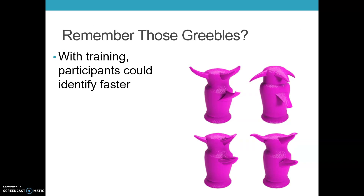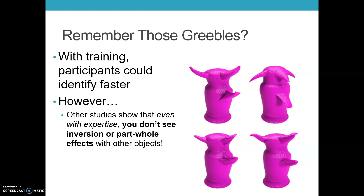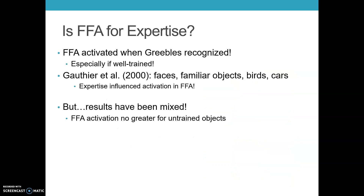Researchers trained people to identify novel objects called greebles. With training, participants are faster at identifying greebles, but even with expertise, you don't see an inversion effect or a part-whole effect with greebles. Gauthier looked at faces, familiar objects, birds for bird watchers, and cars for car enthusiasts, and found that expertise does influence fusiform activation. However, not everybody finds this — others have found that fusiform activation is no greater than for untrained objects, suggesting it may actually be a face area specifically.